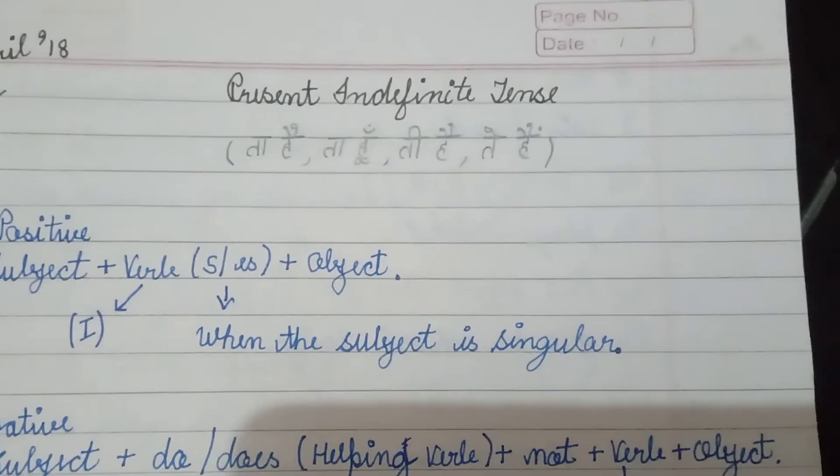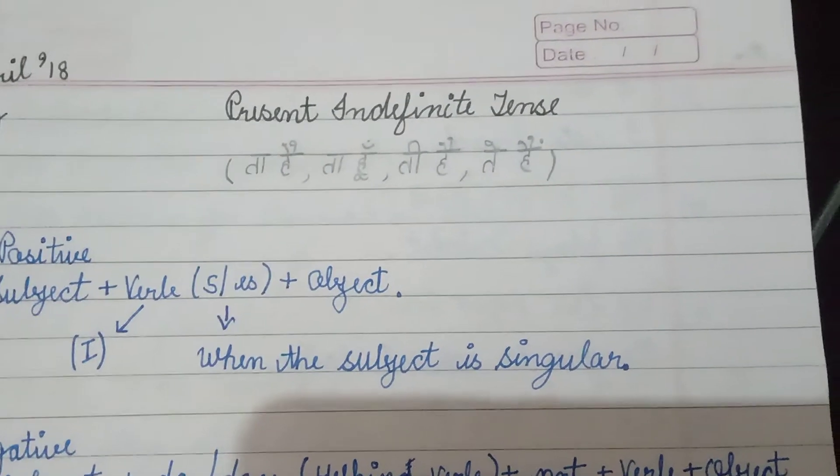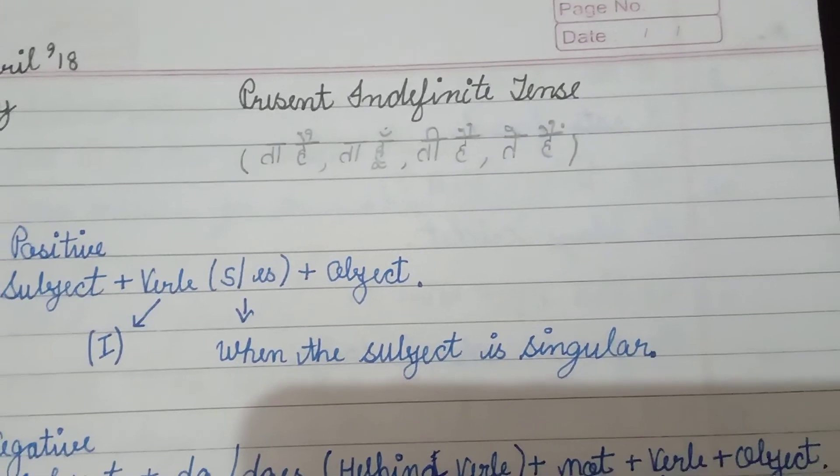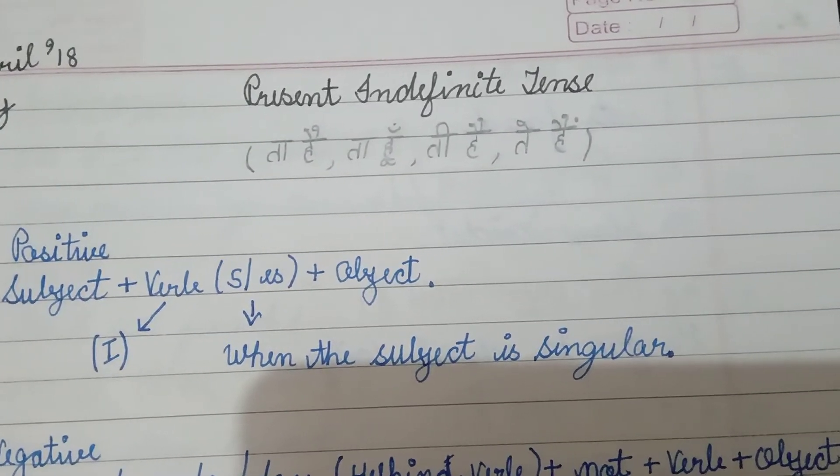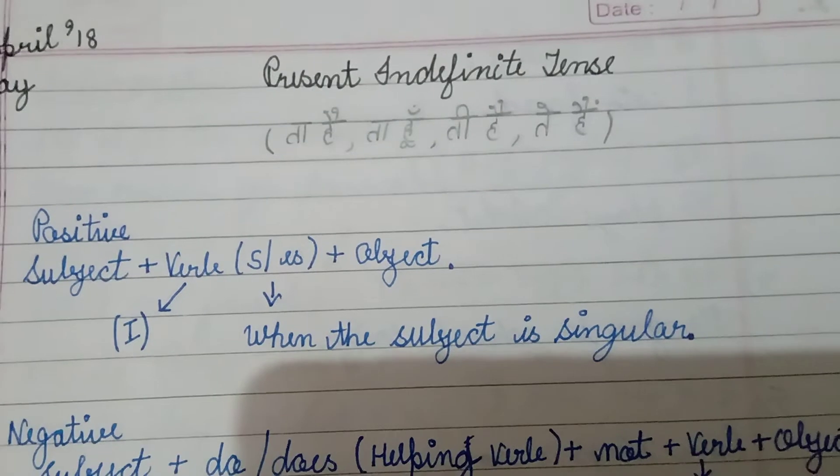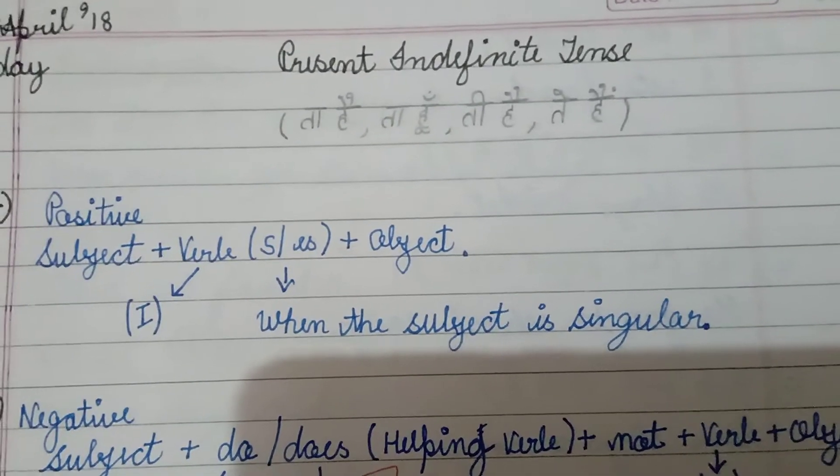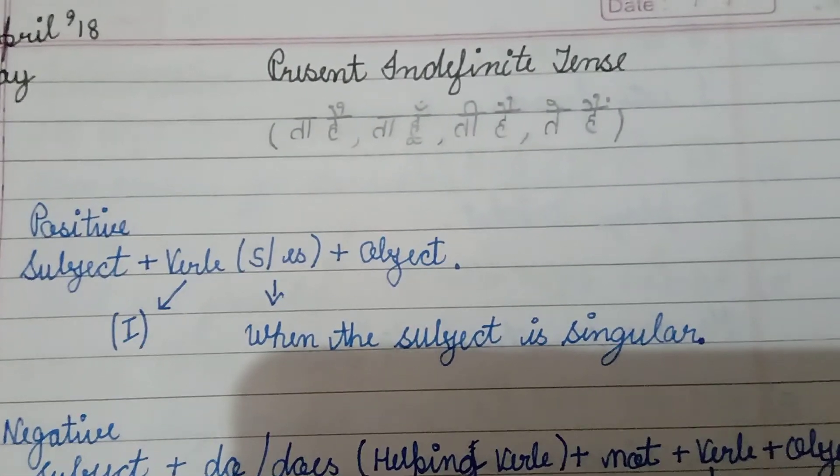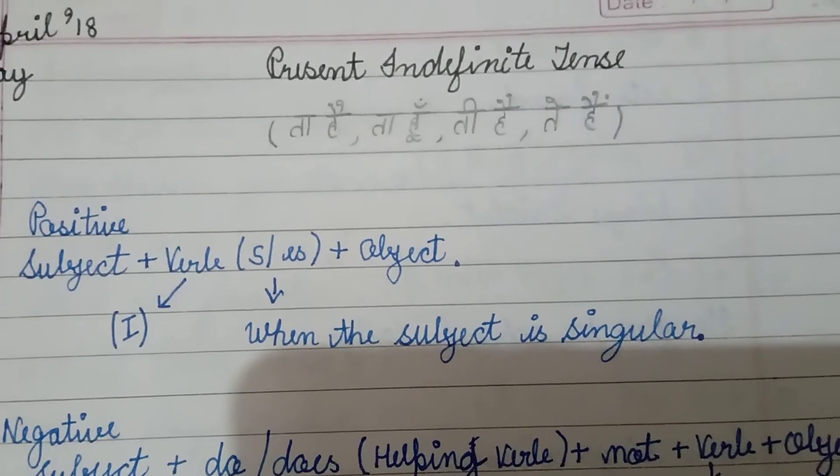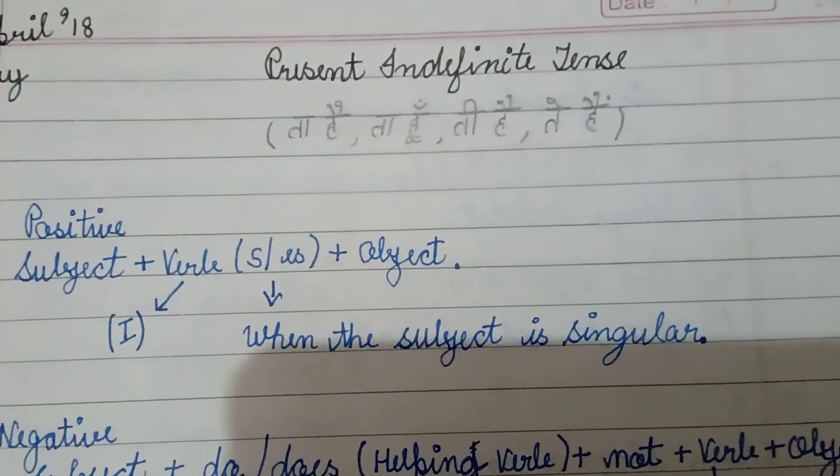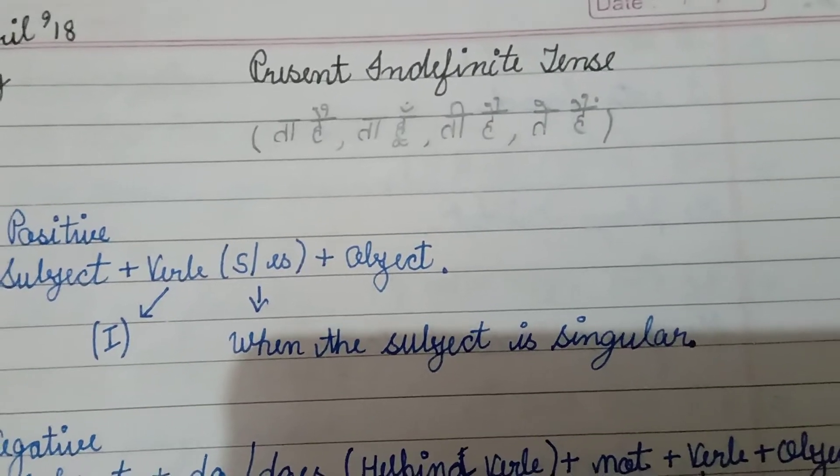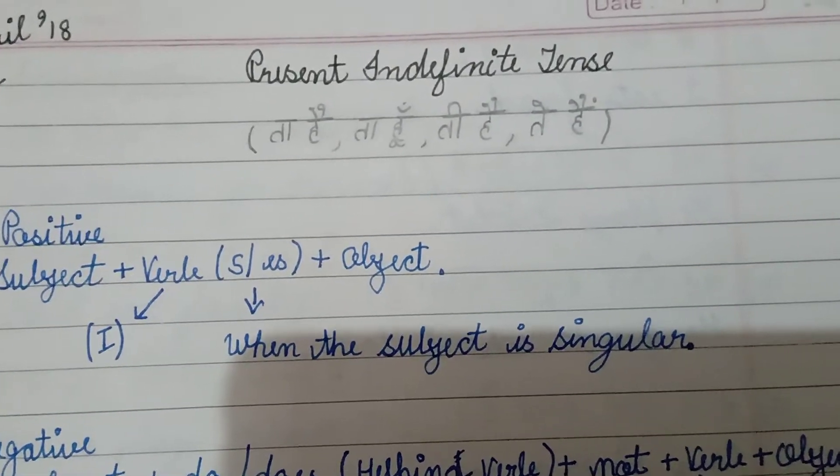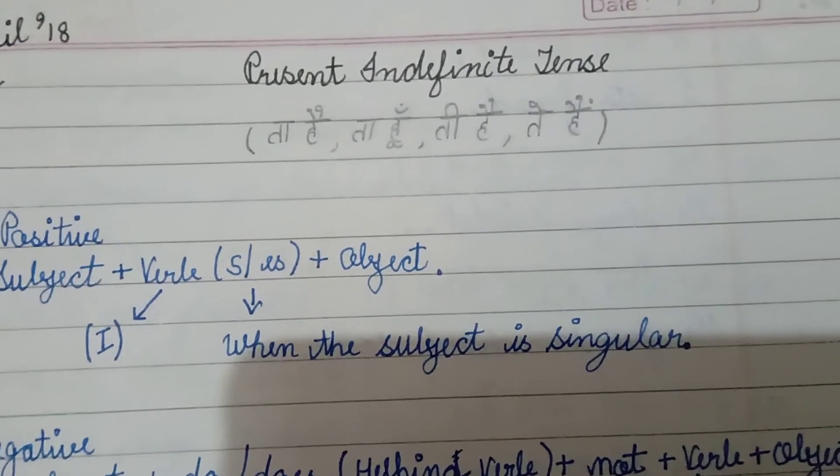The first type of statement is positive statement where our formation will be subject plus verb. You will find roman numeral one written in bracket with verb. That is, the first form of verb will be used in this tense. Then in bracket, it's written S or ES. We will be adding these letters behind the verb when the subject is singular. Then we will be adding object to our sentence to complete it.